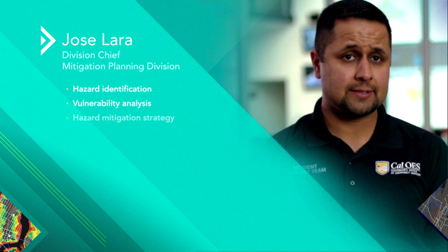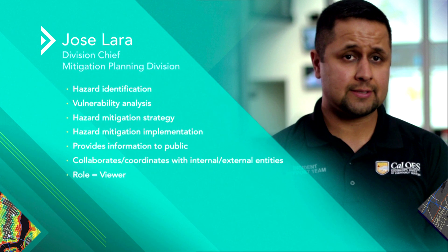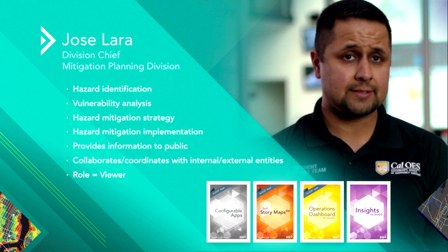If we talk about Jose, he's got a different position — he's mitigation planning division chief. He has to do hazard identification, do some analysis, provide information out to the public, and collaborate and coordinate with internal and external entities. His role is also a viewer, but he can use the exact same apps that Dan would be interested in as well. This illustrates how these apps have multiple capabilities and serve multiple roles.